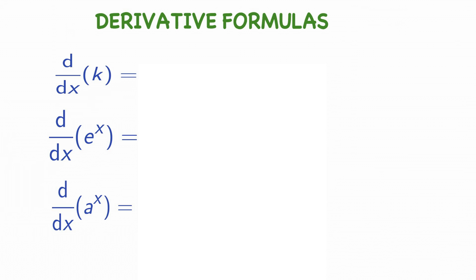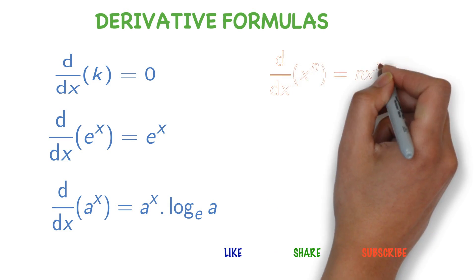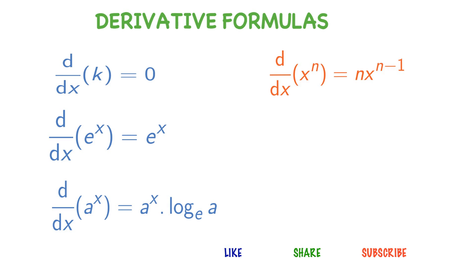Good job. Now we will learn another three formulas. Derivative of x power n is n into x power n minus 1. Derivative of x power n starts with n — n into x power n minus 1. In the power, you reduce one number.